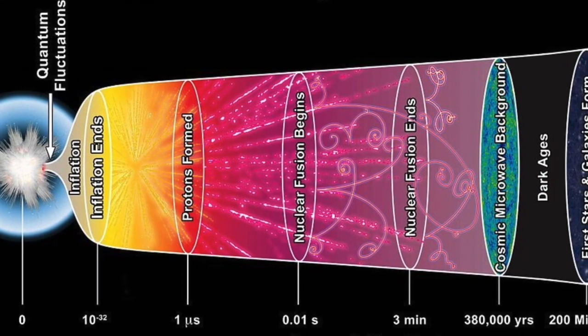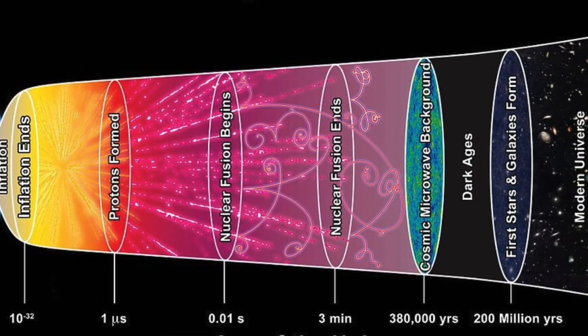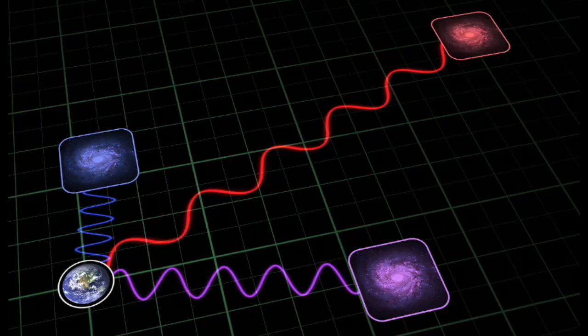The Big Bang is supported by multiple independent cross-corroborating lines of evidence, from the redshift of galaxies to observations of supernovae, to giant cosmic bubbles called baryon acoustic oscillations.